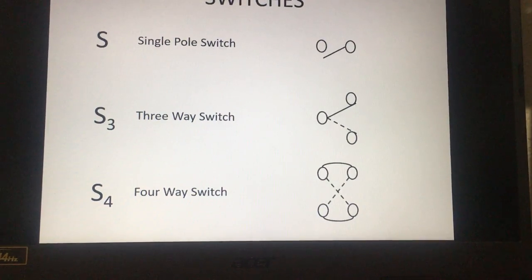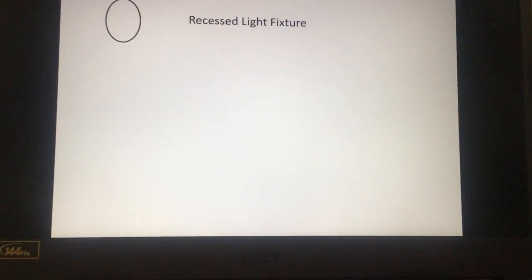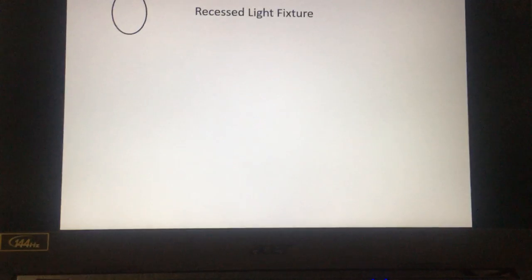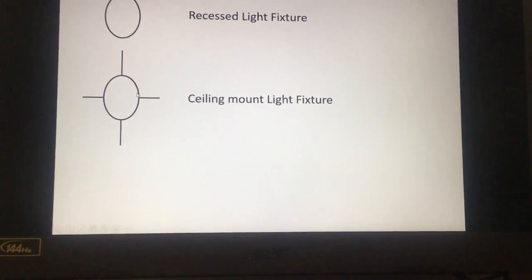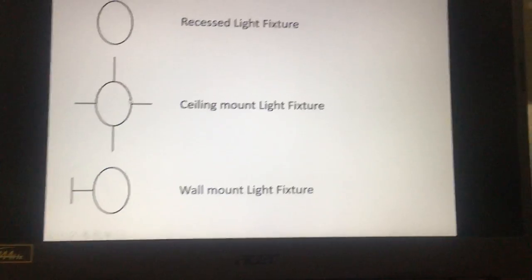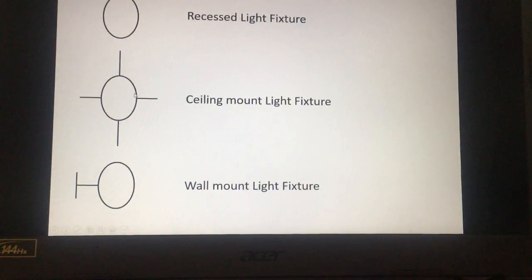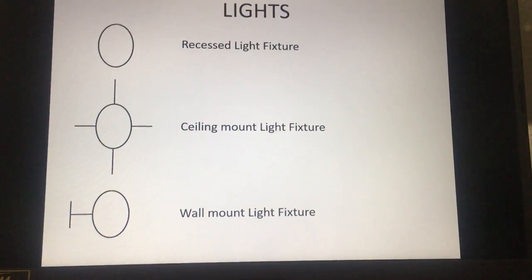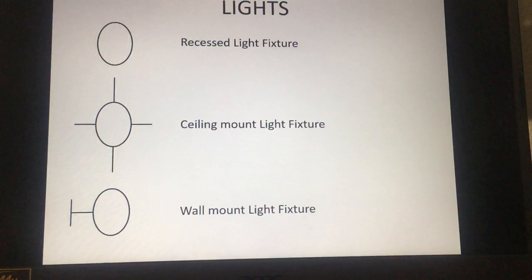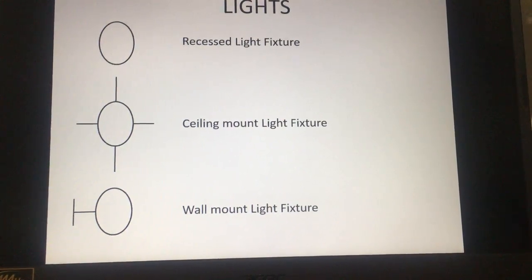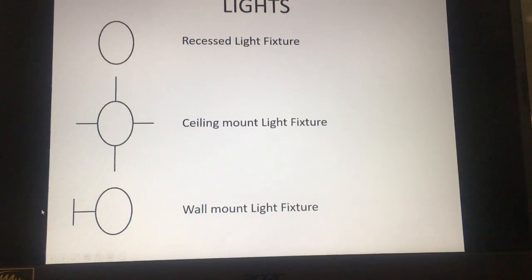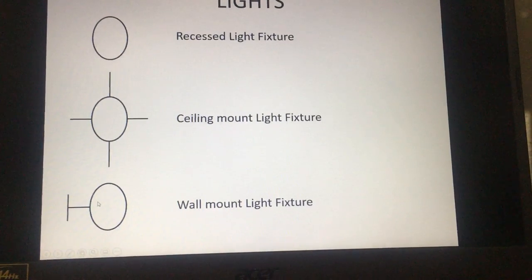That's just considered a recess light, ceiling mount fixture or a wall mount. Later on we're gonna go over blueprint reading. So this would be like a wall sconce, either like the lights on the side of your garage or maybe in your living room you have wall lights.